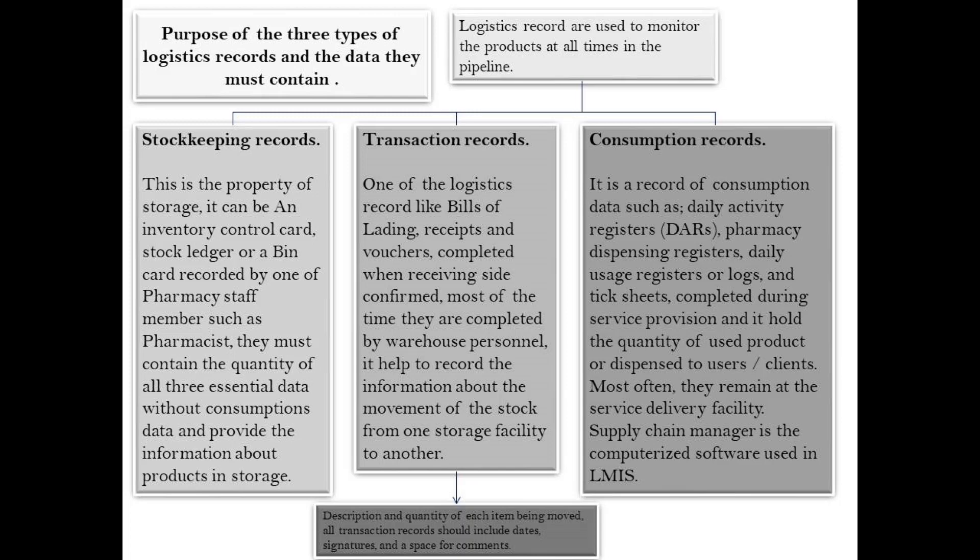Transaction records are one type of logistics record, like bills of lading, receipts and vouchers, completed when the receiving side has confirmed. Most of the time they are completed by warehouse personnel. They help to record information about the movement of stock from one storage facility to another.